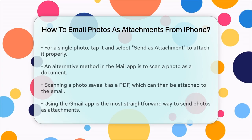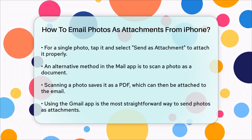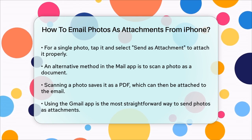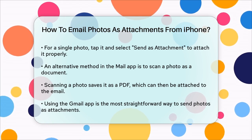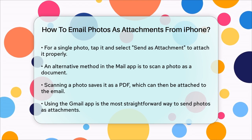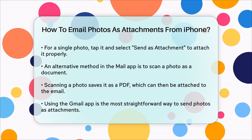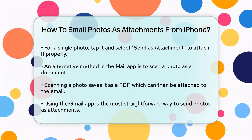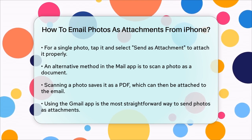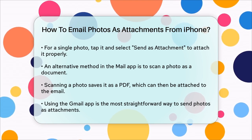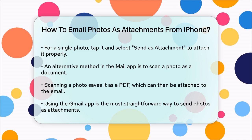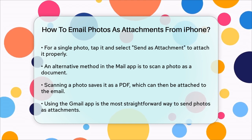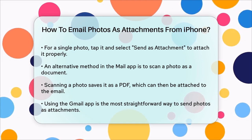If you prefer to use the native Mail app but still want to send photos as attachments, you can try scanning the photo as a document. Tap in the message where you want to insert the attachment, tap above the keyboard, and then tap the icon. You can then use the camera to scan the photo, and it will be saved as a PDF attachment.